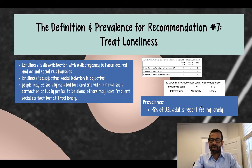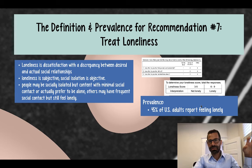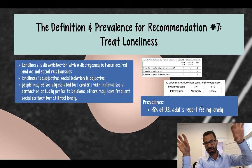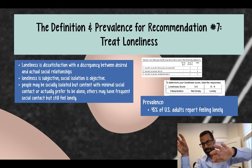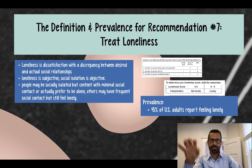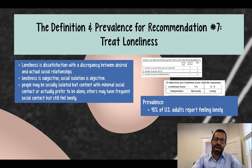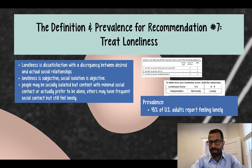Loneliness is actually quite common. The prevalence of loneliness is 45% among U.S. adults. It tends to have a bimodal distribution — highest in the teenage years and in elderly populations — declining after adolescence into midlife, then increasing again as you get older. So I've described a definition of loneliness, a way of screening yourself for loneliness, and noted that loneliness is quite common in the United States.